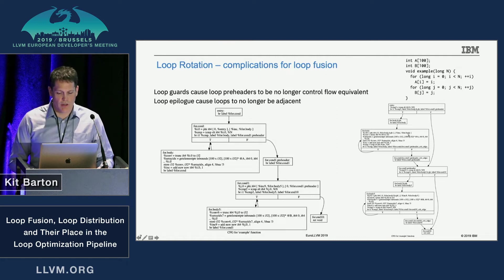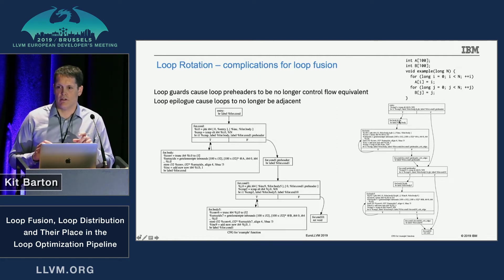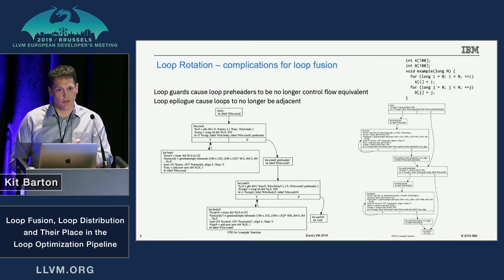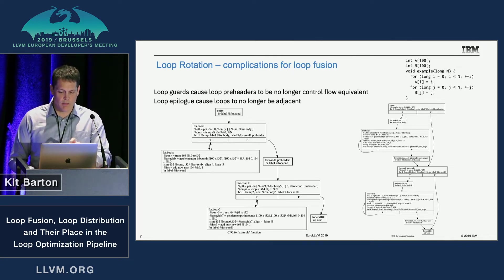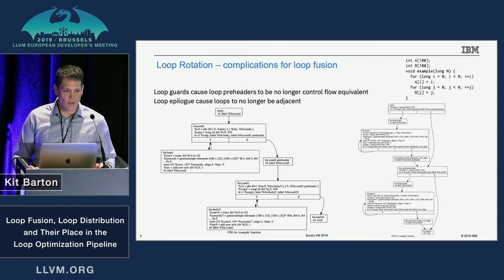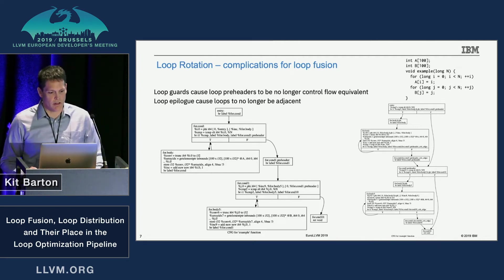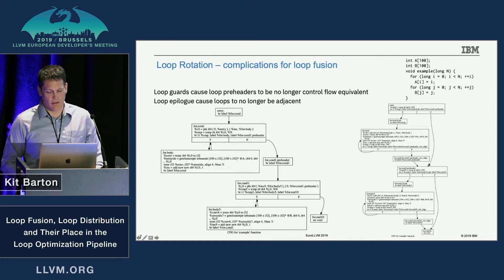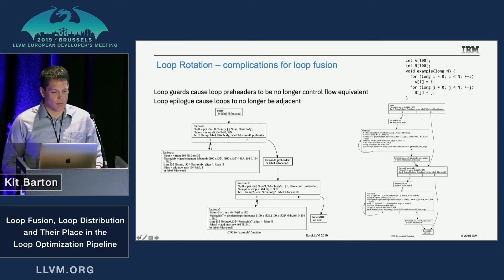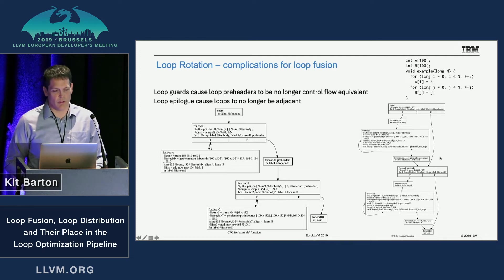This guarded loop structure changes things for fusion. With two loops we'd like to fuse, after rotation each has a guard. We've been using preheaders to check control flow equivalence by checking the dominator and post-dominator trees, but because the preheaders are now under the loop guard, they'll never be control flow equivalent. The presence of the epilogue block also breaks the adjacency check.